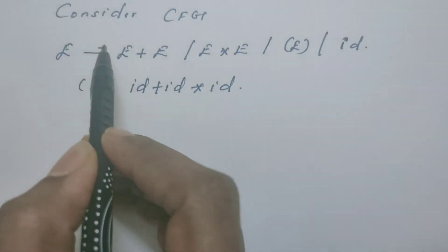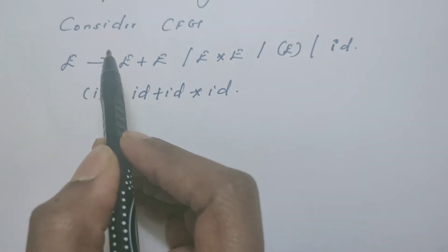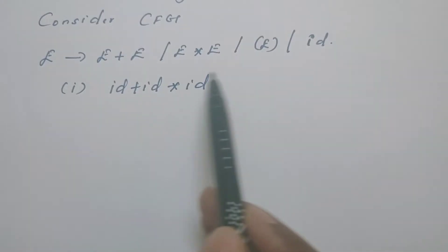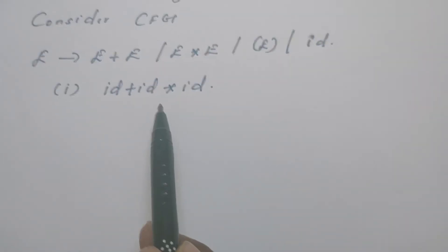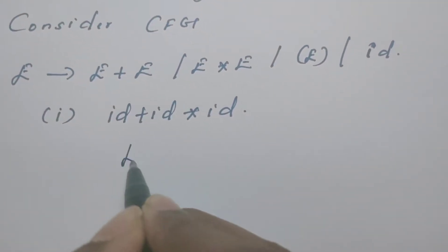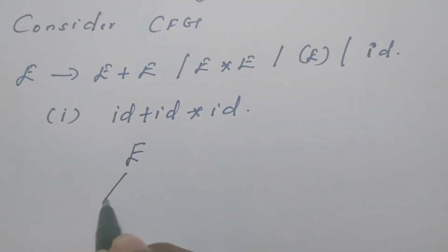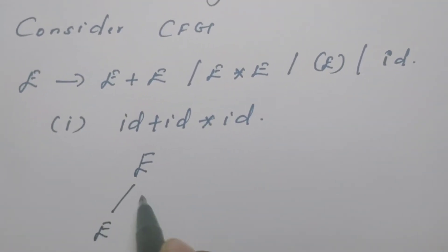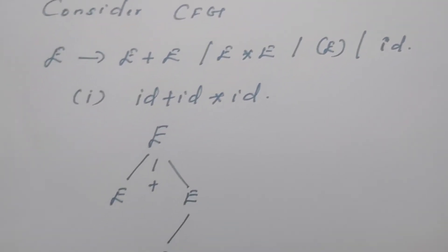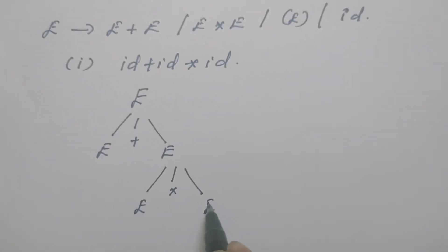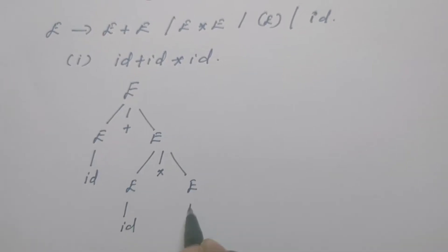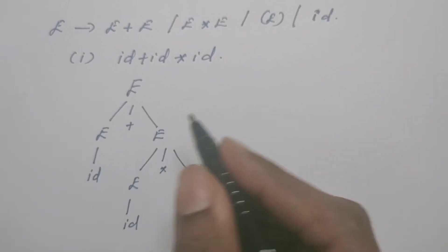Now let us consider one example grammar. I am going to explain how to eliminate ambiguity from this given grammar. We know that this is an expression grammar. Let me consider this as a string. I am going to draw a parse tree for this. The start symbol of the grammar is E. Now this E can be replaced by E plus E, then this E can be replaced by E star E. Every E can be replaced by ID. So this is one parse tree obtained for the given string.